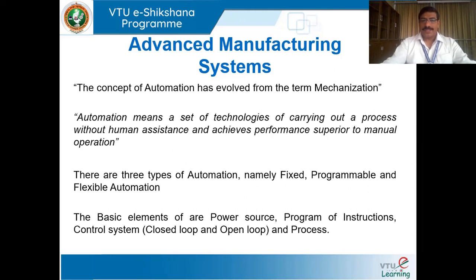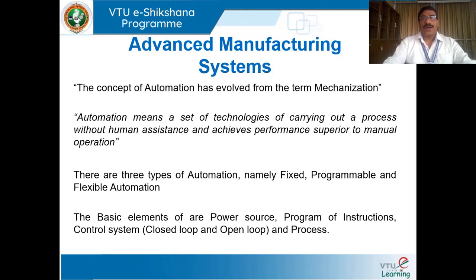When we speak of advanced manufacturing systems, automation means a set of technologies carrying out a process without human assistance, achieving performance superior to manual operation. This includes CNC machines, machining centers like turning centers, milling centers, drilling centers, robots, automated guided vehicles, PLCs, and automated storage and retrieval systems. All these put together form the advanced manufacturing system.